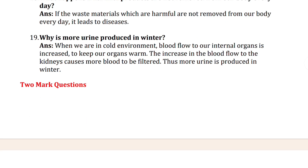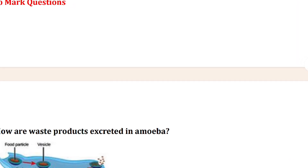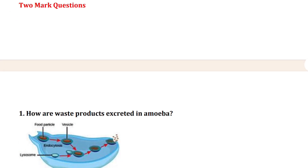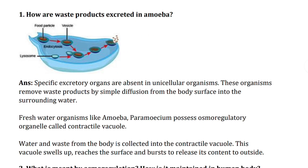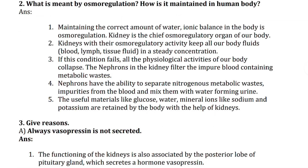You have to make a note — this section is going to be big. From here, the two-mark questions are starting. The first two-mark question is: how are waste products created in the amoeba? The answer is given.